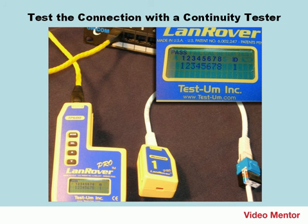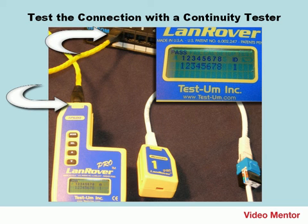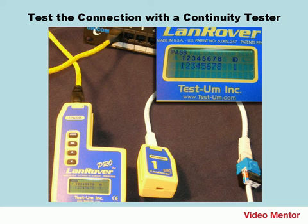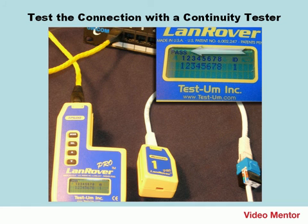The last step is to test the connection with the continuity tester. Connect your continuity tester using the supplied patch cable, and connect the supplied terminator as well. Make sure to use the port that you wired — they're numbered on the back as well as on the front. In this example, I have the continuity tester connected to the patch panel and the terminator connected to the jack, but quite often in the field I'll do the reverse and walk around the building with the continuity tester. Turn on the continuity tester and test the connection. If all wires are correctly punched down on both ends, you should get a beep and/or a message that says pass.